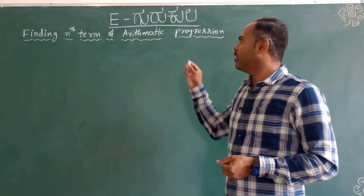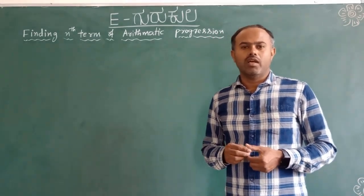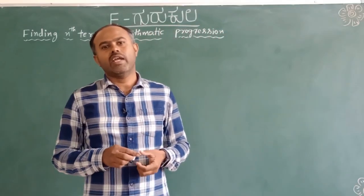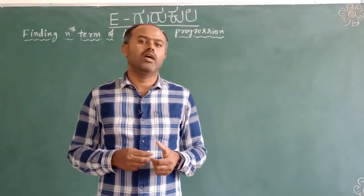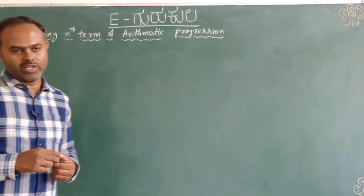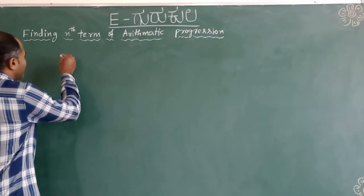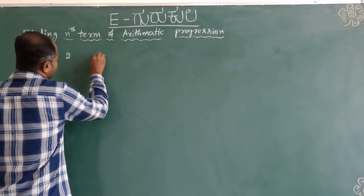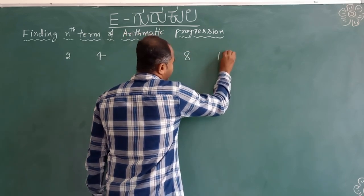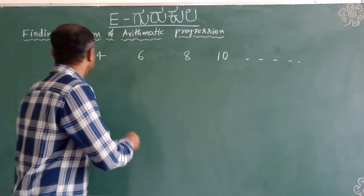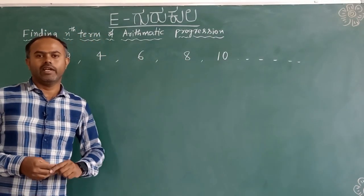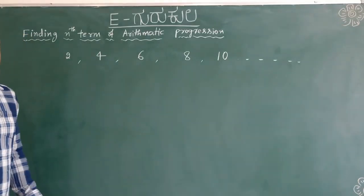Arithmetic progression is a list of numbers in which, if you take the difference between any two consecutive terms in that list of numbers, it will remain the same. That is called an arithmetic progression. Let us take an example.